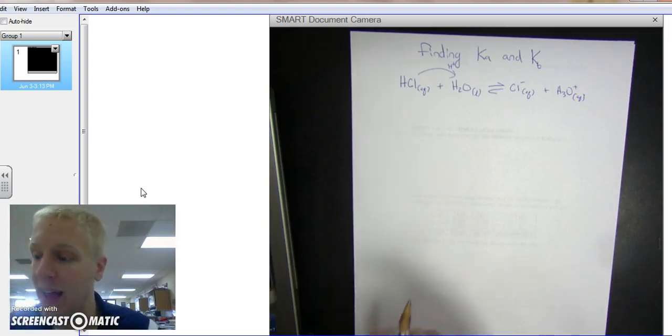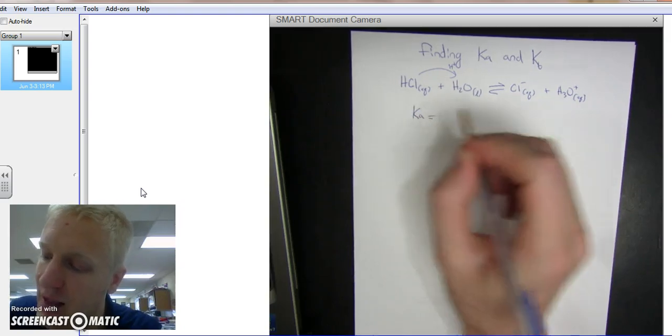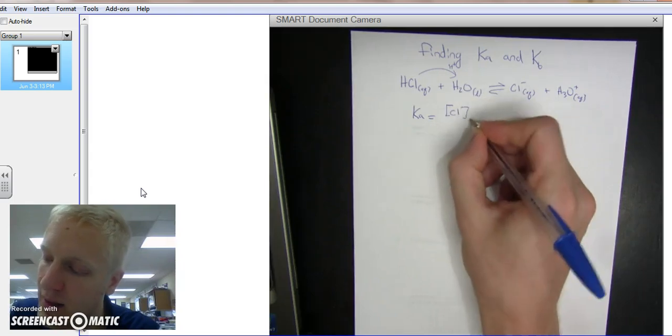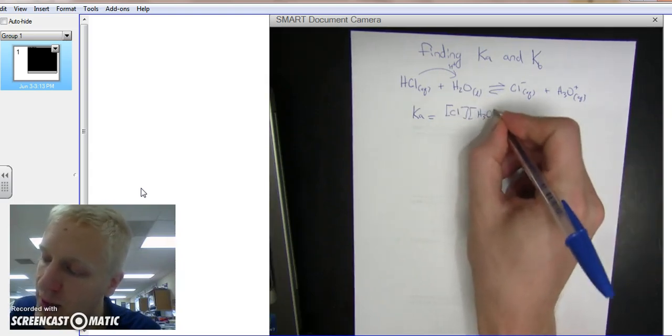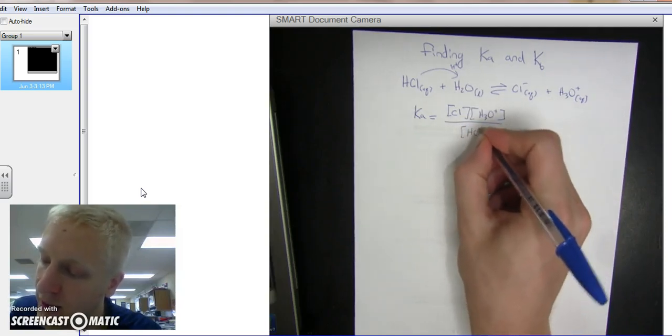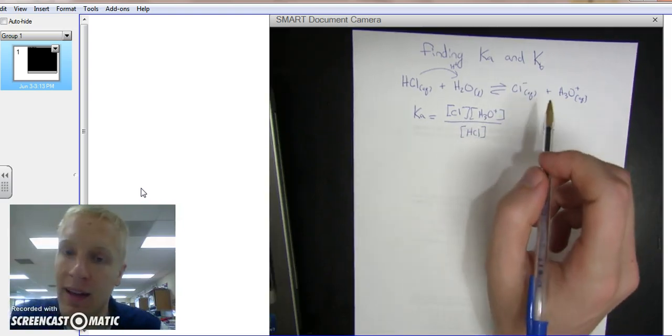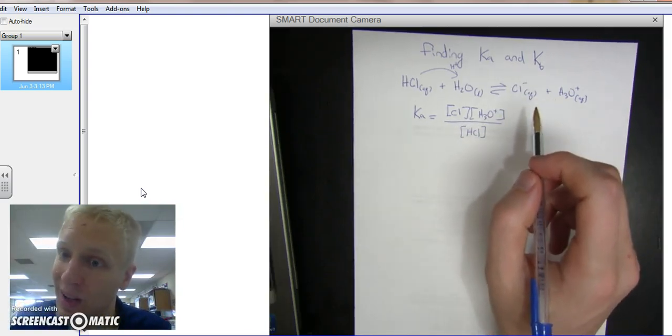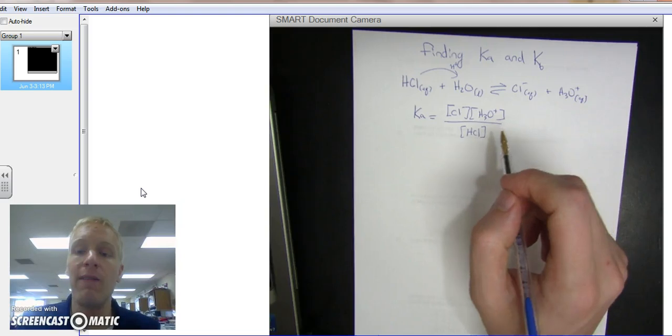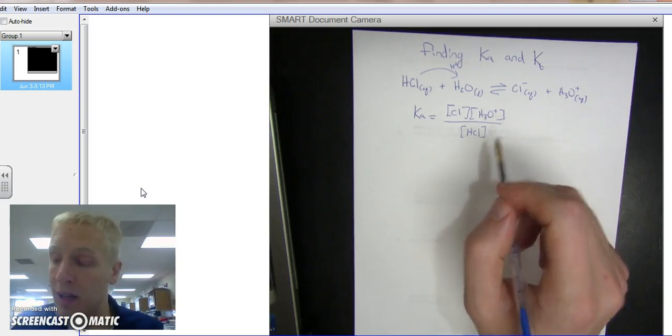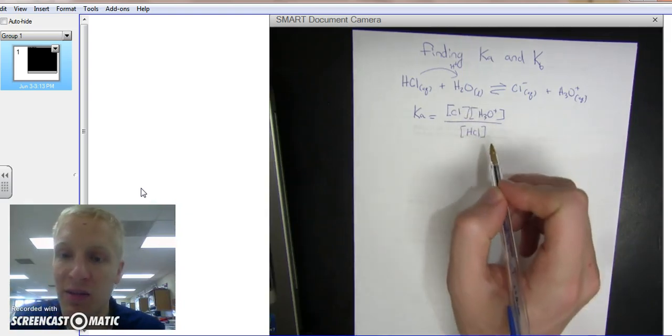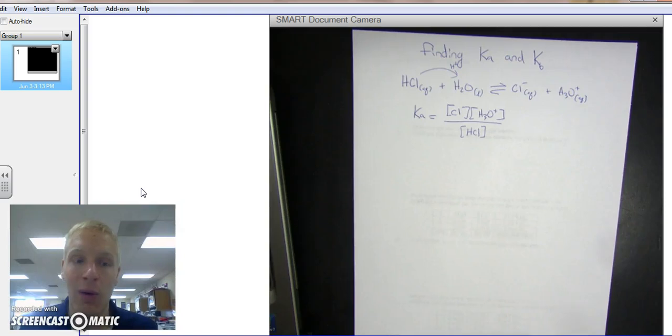Once we have that, we can write our Ka expression. Ka equals products over reactants: concentration of Cl⁻ times concentration of H3O⁺ divided by concentration of HCl. Remember that in an equilibrium expression, we only include aqueous and gaseous substances. If you have a liquid or solid, you omit it. So this liquid H2O we are not going to include. Our Ka = [Cl⁻][H3O⁺]/[HCl].